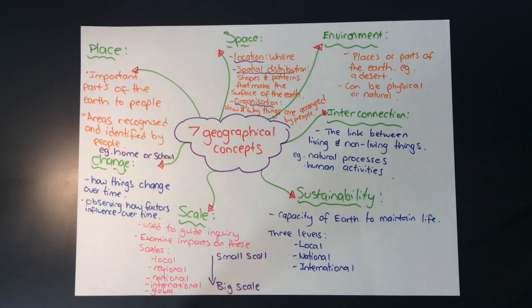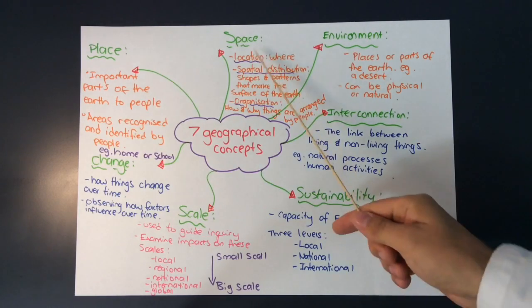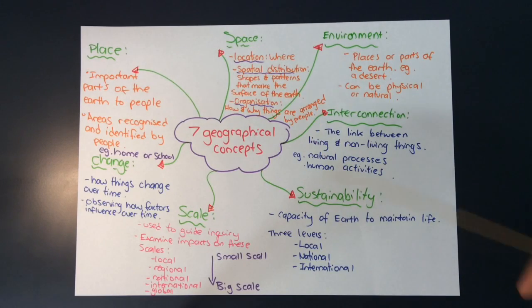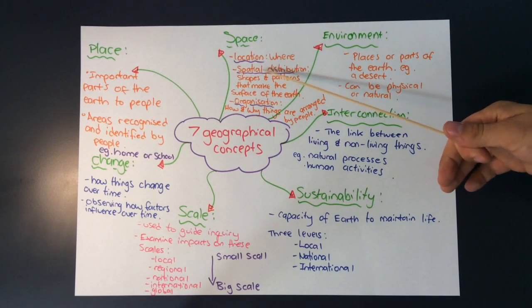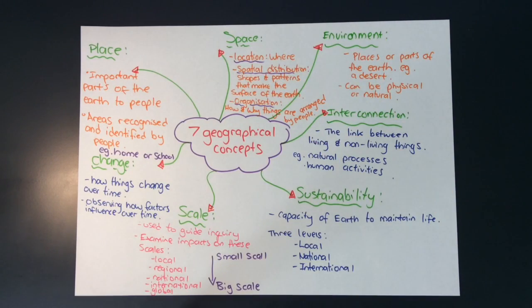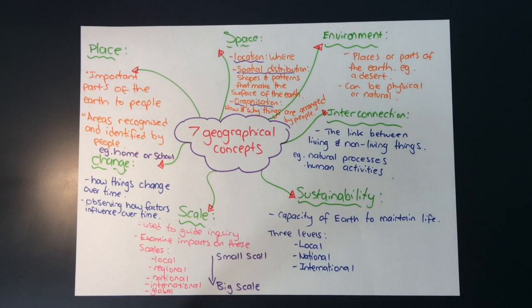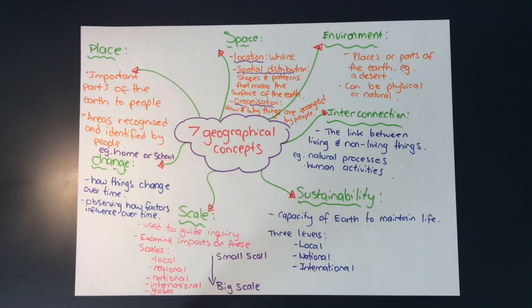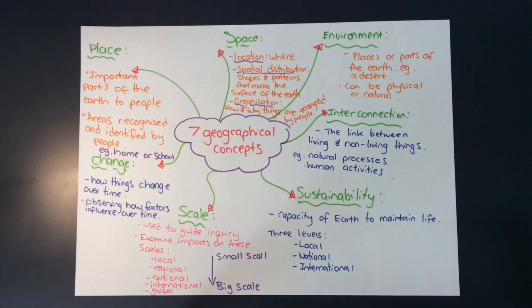Space refers to location, spatial distribution, and organization. Location is just where a place is located, or different places on earth. Spatial distribution is the shapes and patterns that make up the surface of the earth, so things like mountains. Organization refers to how and why things are arranged or managed by people.